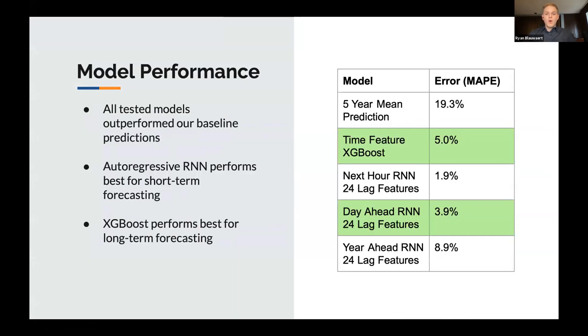So to summarize, both models that we tested do significantly better than our baseline prediction. And we are actually going to be using the XGBoost gradient boosted regressor and that recurrent neural network moving forward into production.